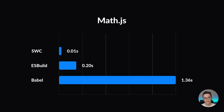With MathJS we see very similar results. Both SWC and ESBuild did almost the same times as they did with Bootstrap, but as the MathJS library is a little bit larger than the Bootstrap JavaScript, Babel did even worse this time, finishing in 1.36 seconds.